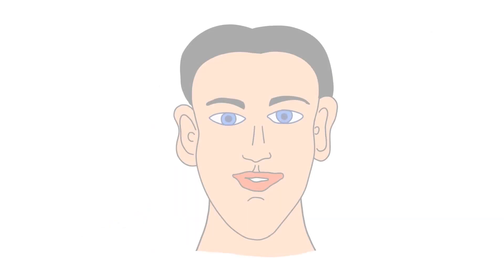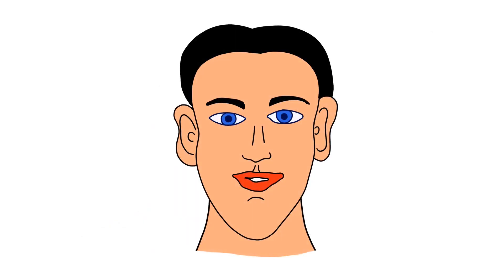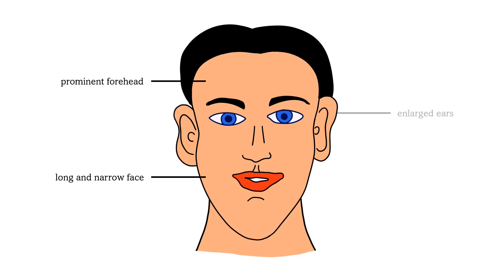In addition to mental retardation, affected males have long, narrow faces, a prominent forehead, enlarged ears, and increased testicular size.